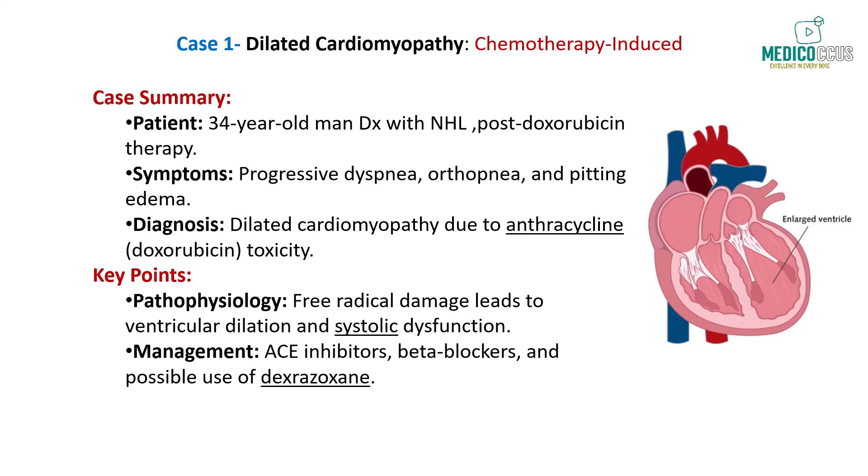Doxorubicin exerts its anti-tumor effects by intercalating into DNA and generating free radicals. Unfortunately, these same mechanisms can cause myocardial damage, leading to dilated cardiomyopathy. This condition is characterized by ventricular dilation and systolic dysfunction, resulting in a decreased ejection fraction and heart failure symptoms. Recognizing anthracycline-induced cardiomyopathy is crucial for initiating appropriate management, which may include ACE inhibitors, beta blockers, and potentially the discontinuation of the offending agent. Prophylactic use of dexrazoxane, a cardioprotective agent, is an important preventive strategy. This case underscores the importance of understanding drug-induced cardiomyopathies, a common topic in the Step 1 exam.